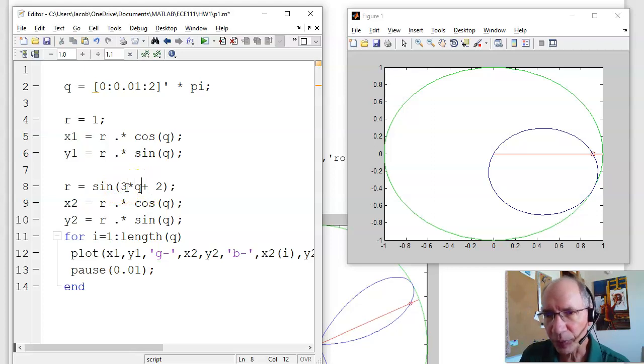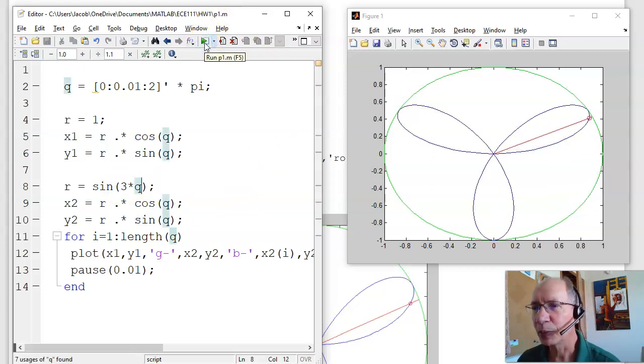Just change that one line of code. I'm now plotting r equals sine of three theta. And that's the beauty of scripts. They're really easy to build upon. They're really easy to modify.